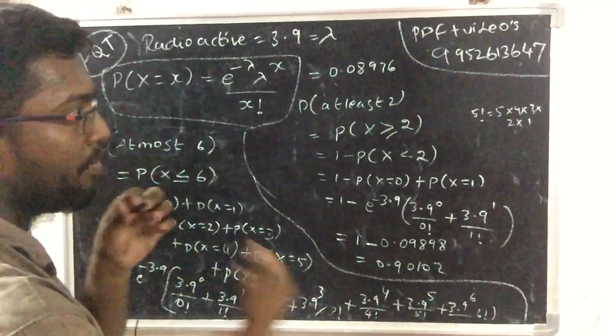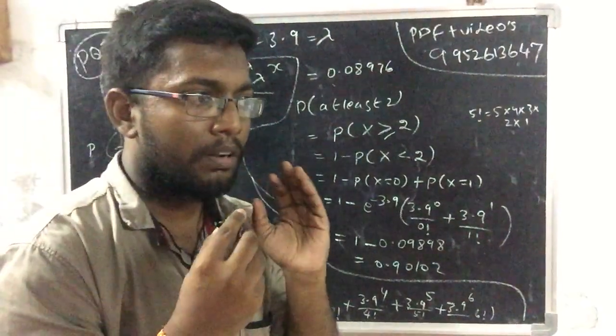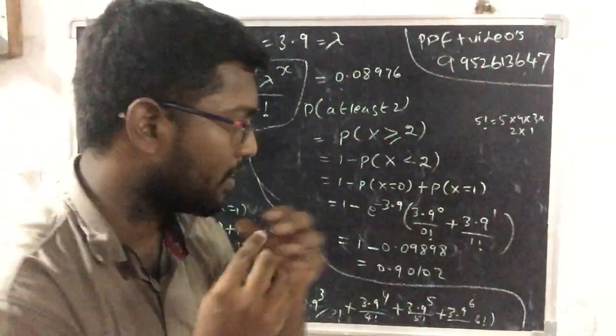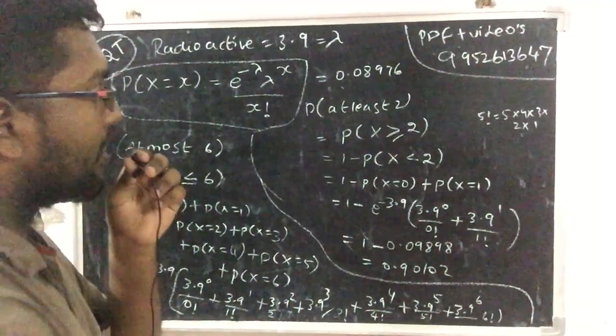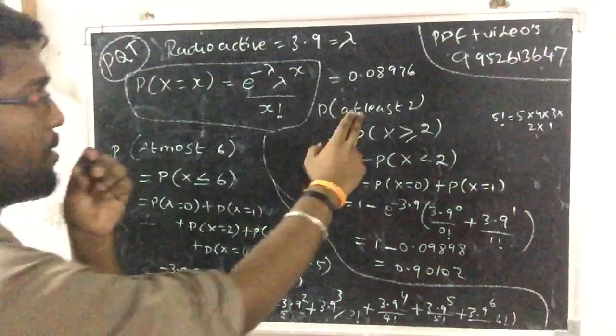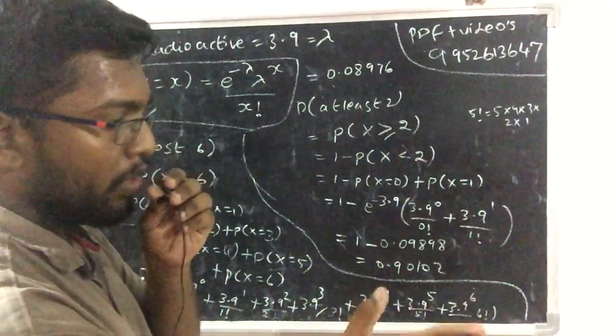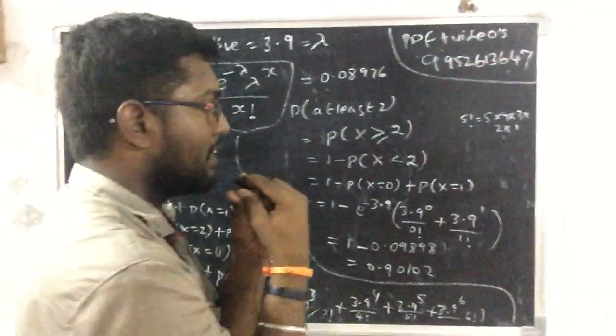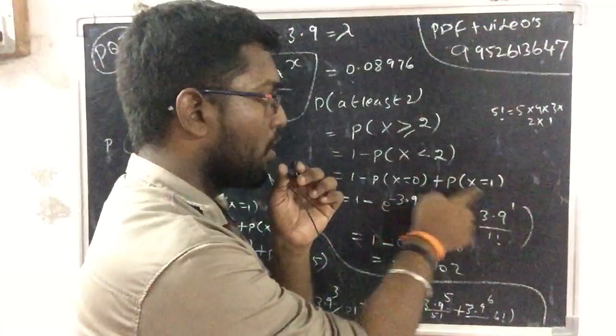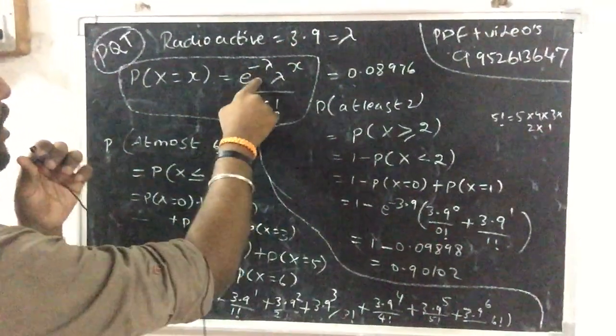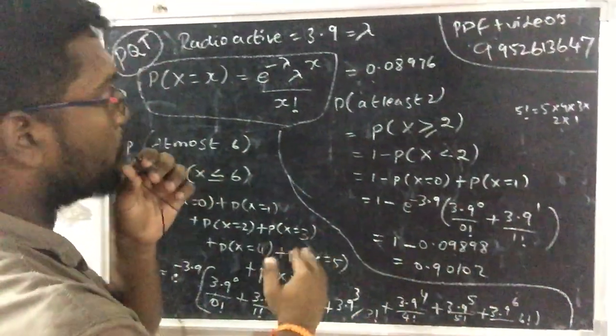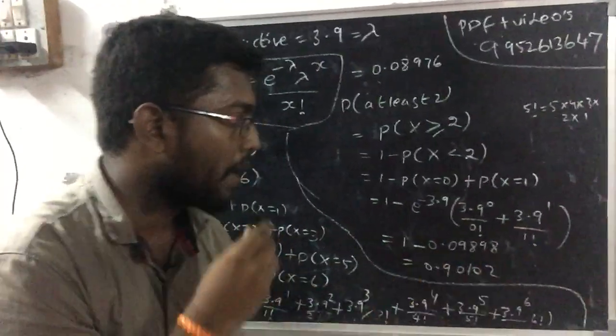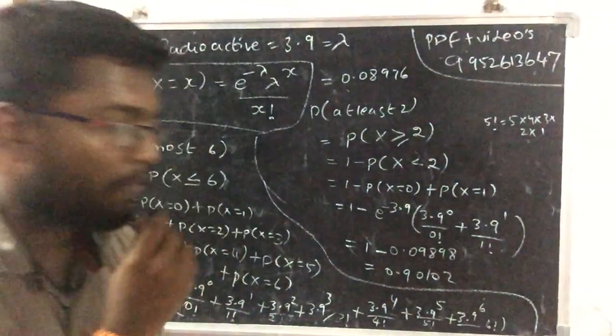We need to calculate the factorials: 4 factorial equals 24, 5 factorial equals 120. e to the power minus 3.9 is approximately 0.0202. Then 3.9 squared, 3.9 to the power 1, calculating these values. If you calculate 0.0898 minus 1, you get the final value for this problem.